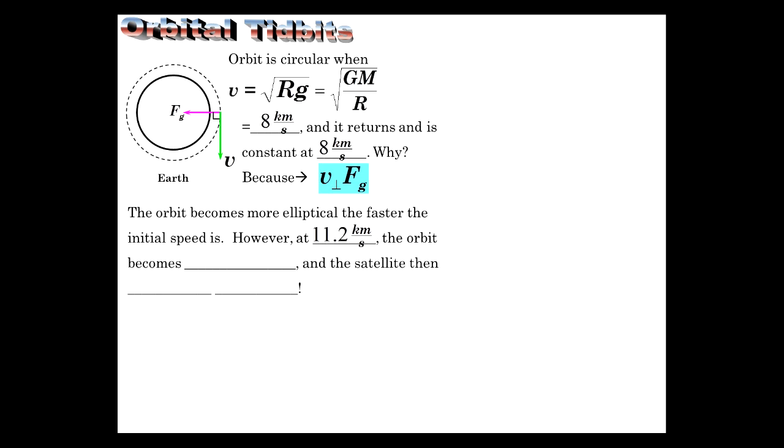It becomes more elliptical the faster the initial speed is, but at a particular value of 11.2 kilometers per second, or about eight miles a second, the orbit becomes parabolic. At that speed the satellite escapes forever and never returns again.